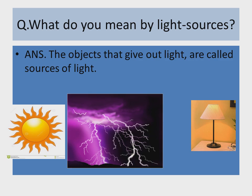Let's see the question. What do you mean by light sources? How will you say something is a light source? The answer is: the objects that give out light are called sources of light. Anything which gives light is called a source of light.